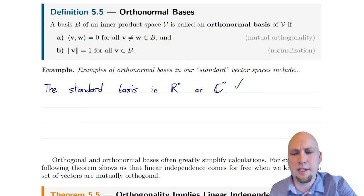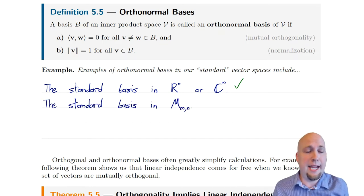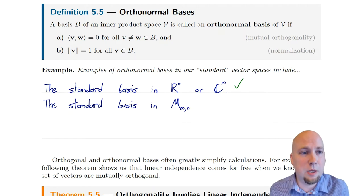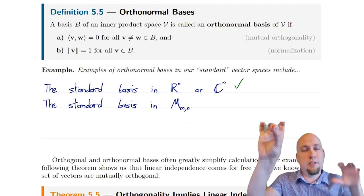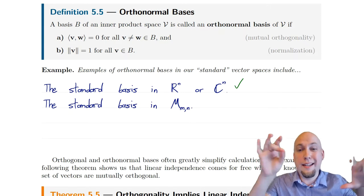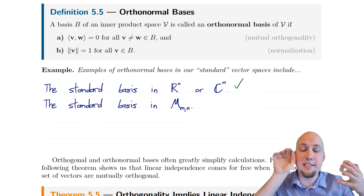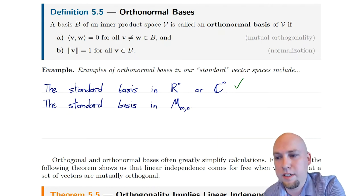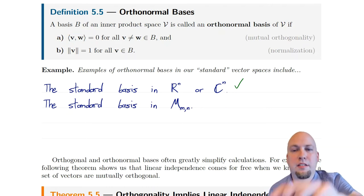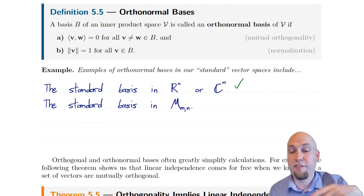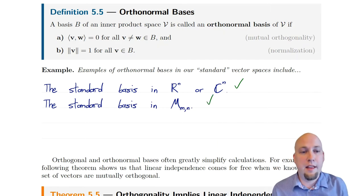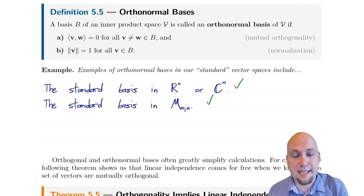If we go to more exotic vector spaces like the space of m by n matrices, we've seen a standard basis there as well — the matrices that have a one in a single entry and zeros everywhere else. You just go through the calculation using the standard Frobenius inner product on this vector space, and it's straightforward to check that all of the inner products of those E_ij matrices equal zero. Their lengths in the Frobenius norm — the norm induced by the inner product — all equal one. So that is an orthonormal basis in that vector space as well.